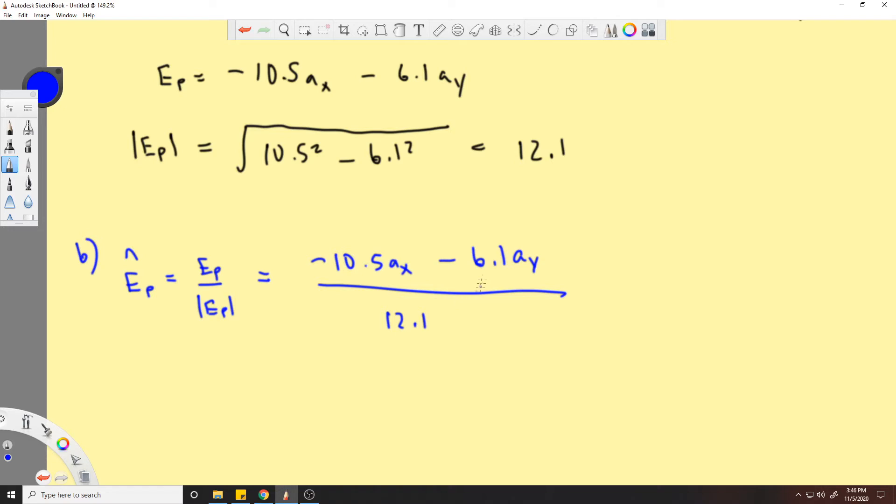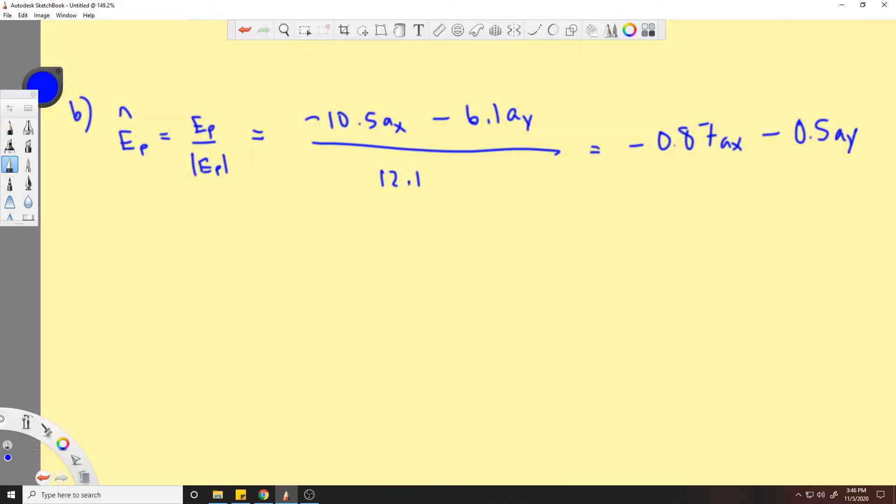And because it's a vector, you remember you divide each term by the scalar. So you're dividing this 10.5 term by 12, the 6.1 term by 12, and that will leave you with a result of -0.87 a_x minus 0.5 a_y. And please, if I get some of these numbers wrong, just leave a comment and I'll make sure it's fixed. I believe these are all right.